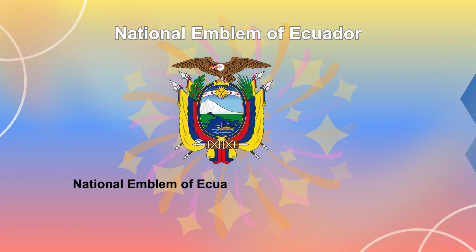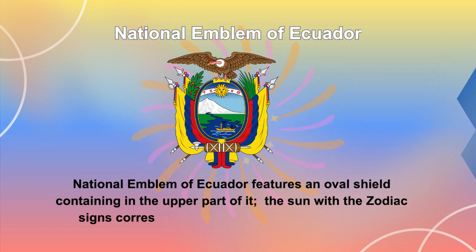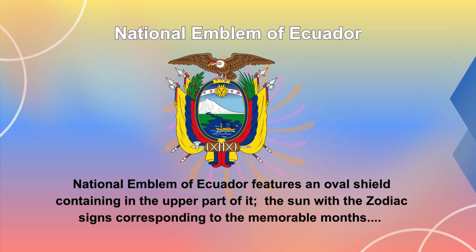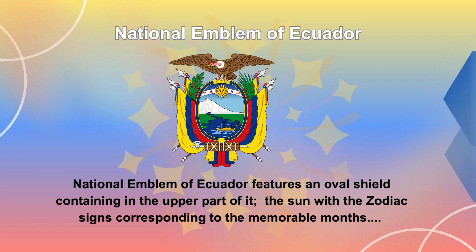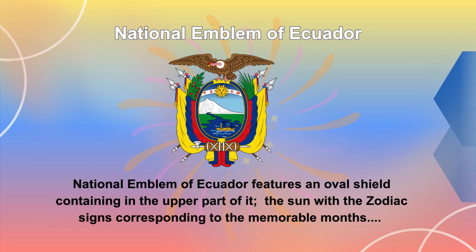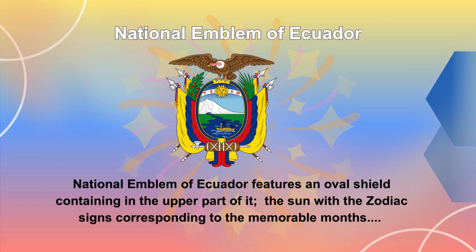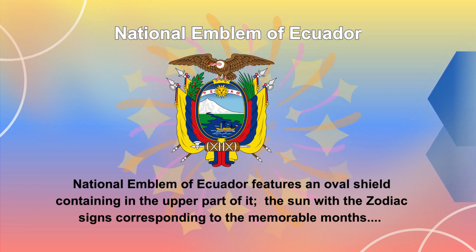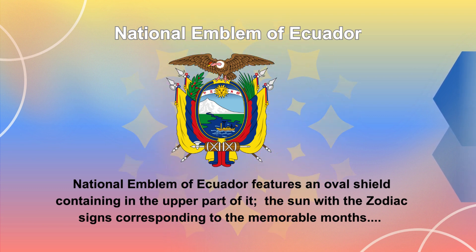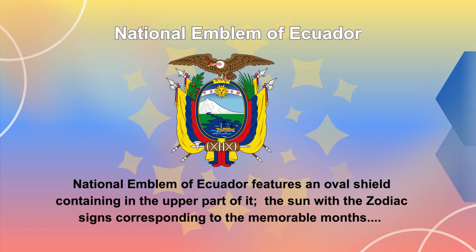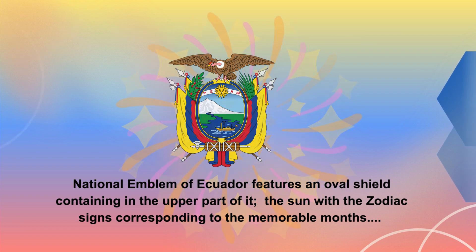The National Emblem of Ecuador features an oval shield containing, in the upper part, the sun with the zodiac signs corresponding to the memorable months of March, April, May and June. In the lower part, to the right, is represented the historical mountain Chimborazo, from where a river starts, and a steamship is depicted as a symbol of navigation and commerce. The shield rests on a bundle of consular beams, a symbol of Republican dignity, adorned with national flags and branches of palm and laurel, and surmounted by a condor with its wings displayed.